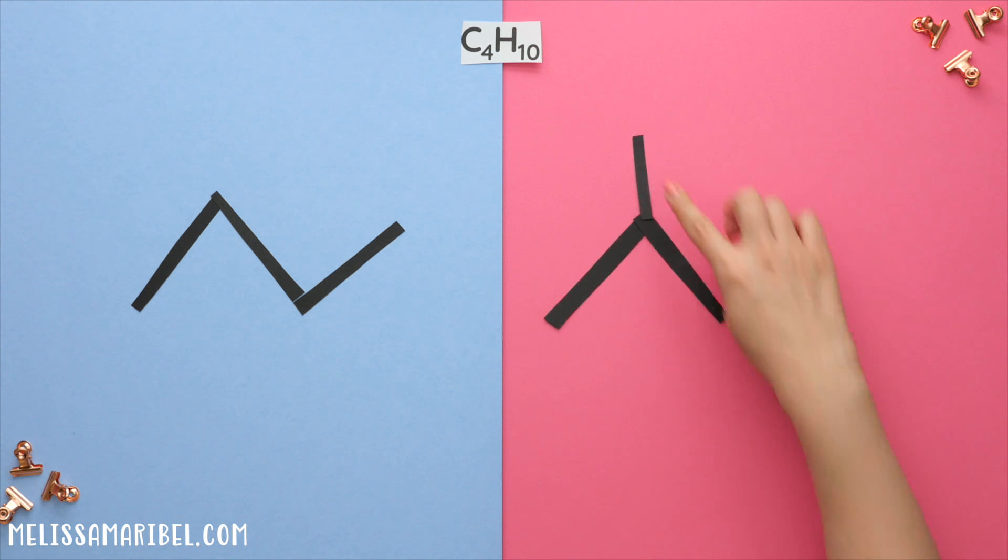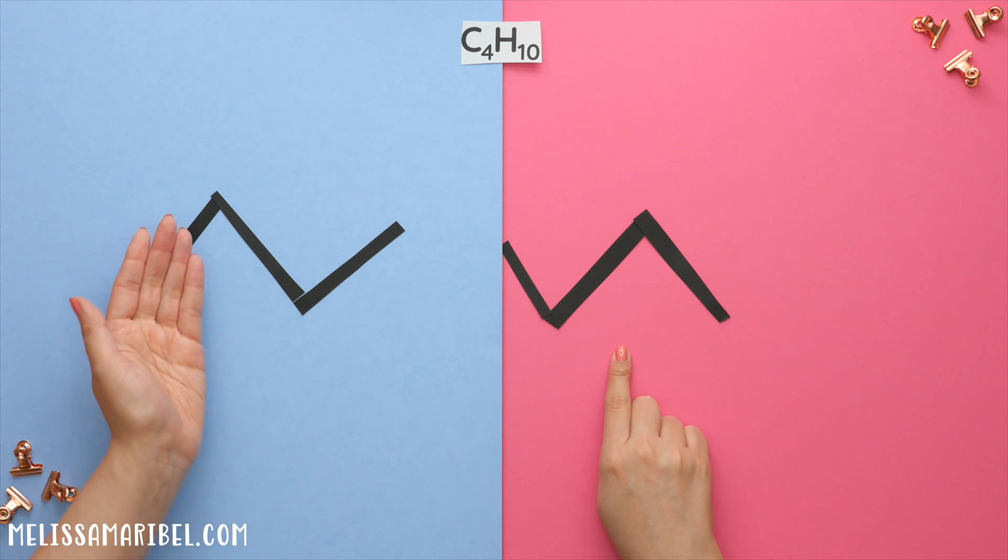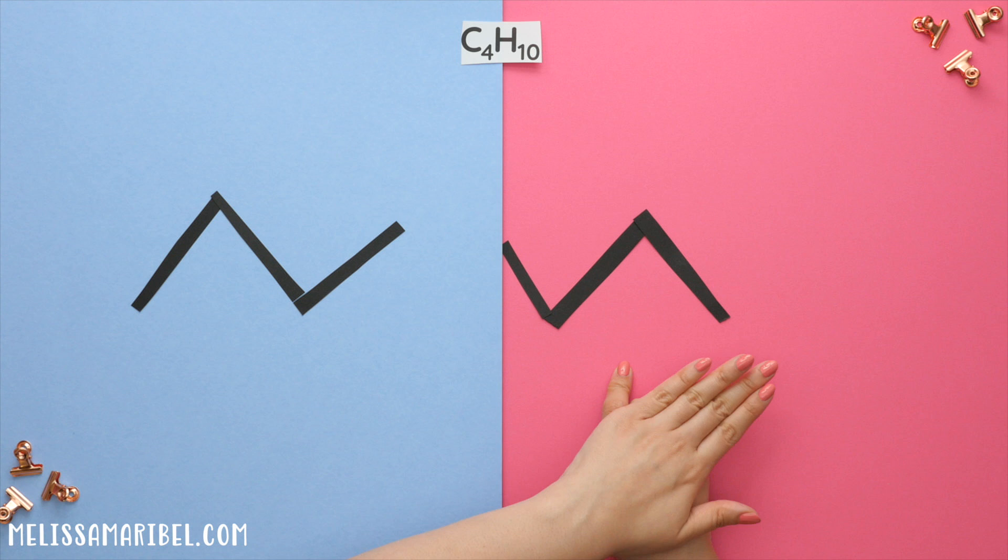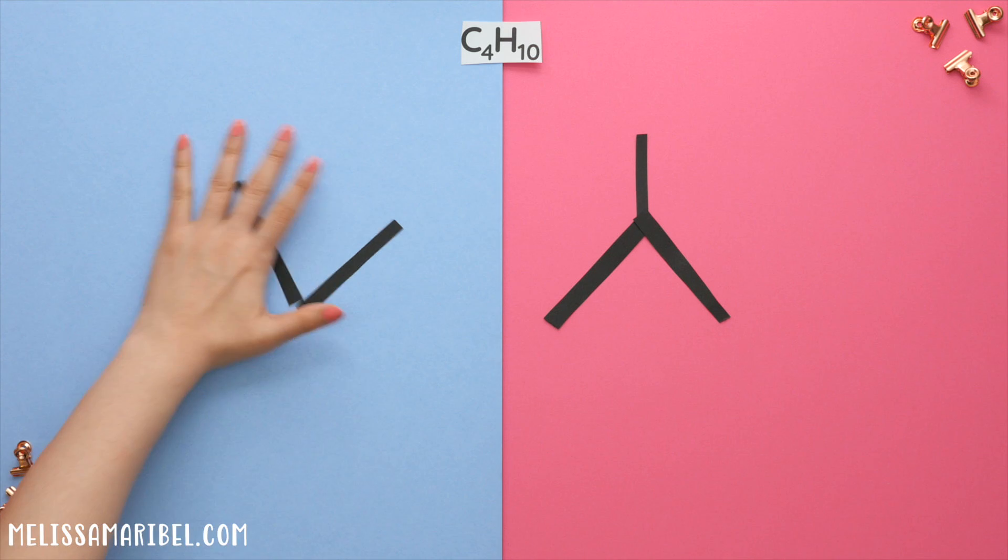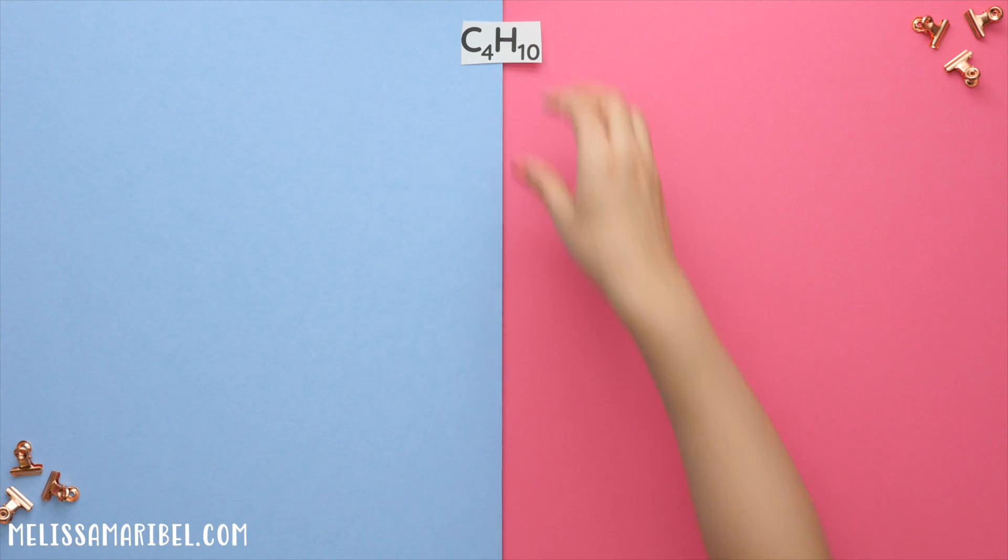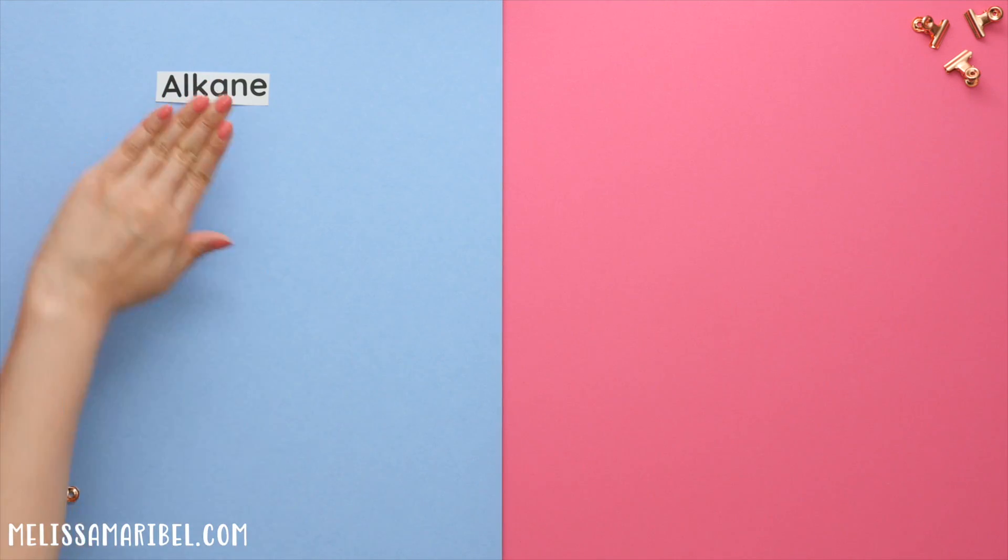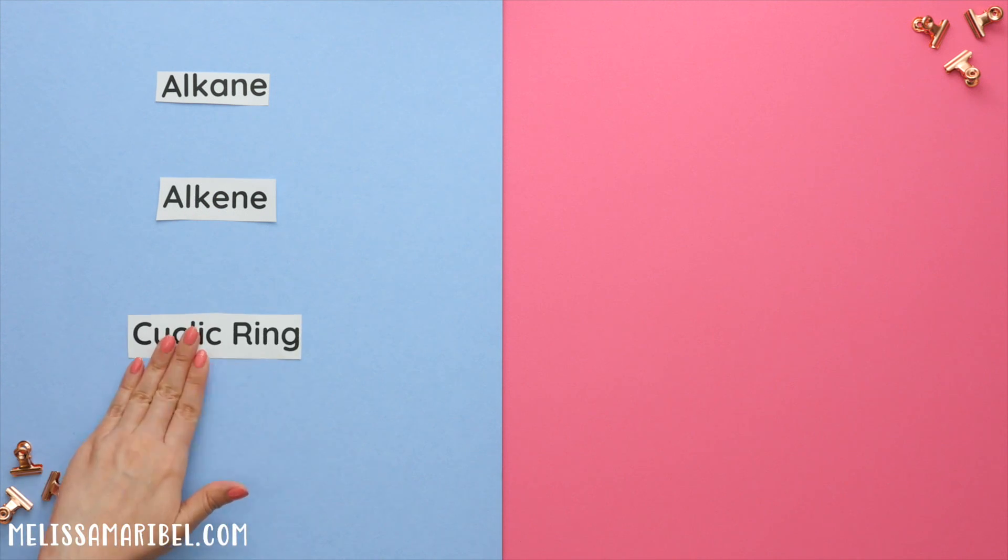If we were to move this methyl group here, it wouldn't have been a constitutional isomer because it is the same structure as the first one just flipped around. So we only have 2 constitutional isomers. Sometimes we will be given a chemical formula that can have constitutional isomers that are either an alkane, an alkene, or a cyclic ring.